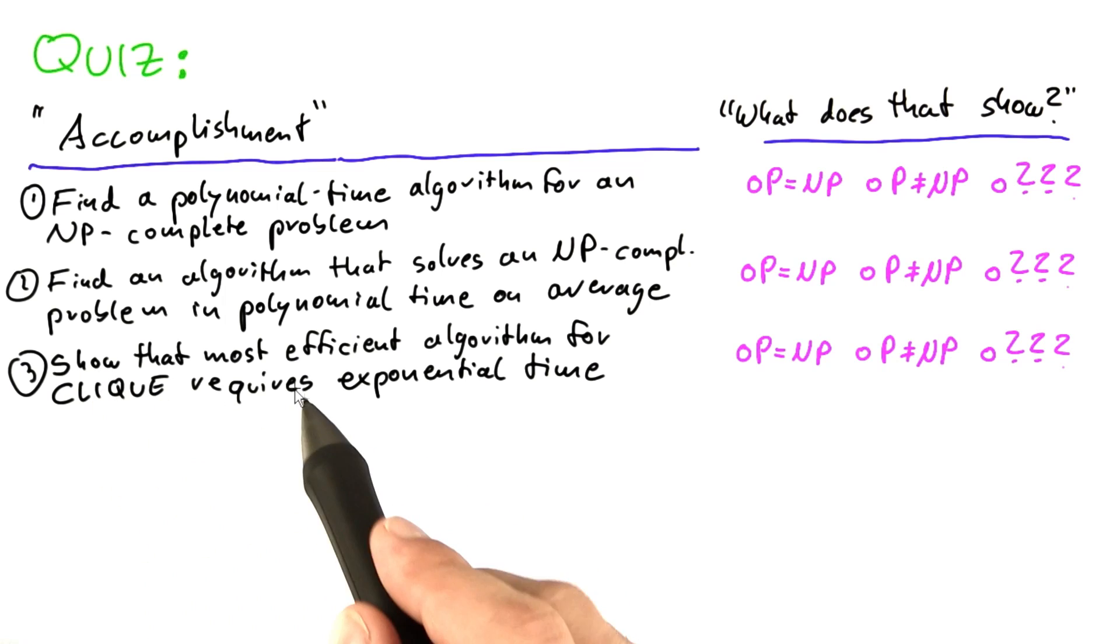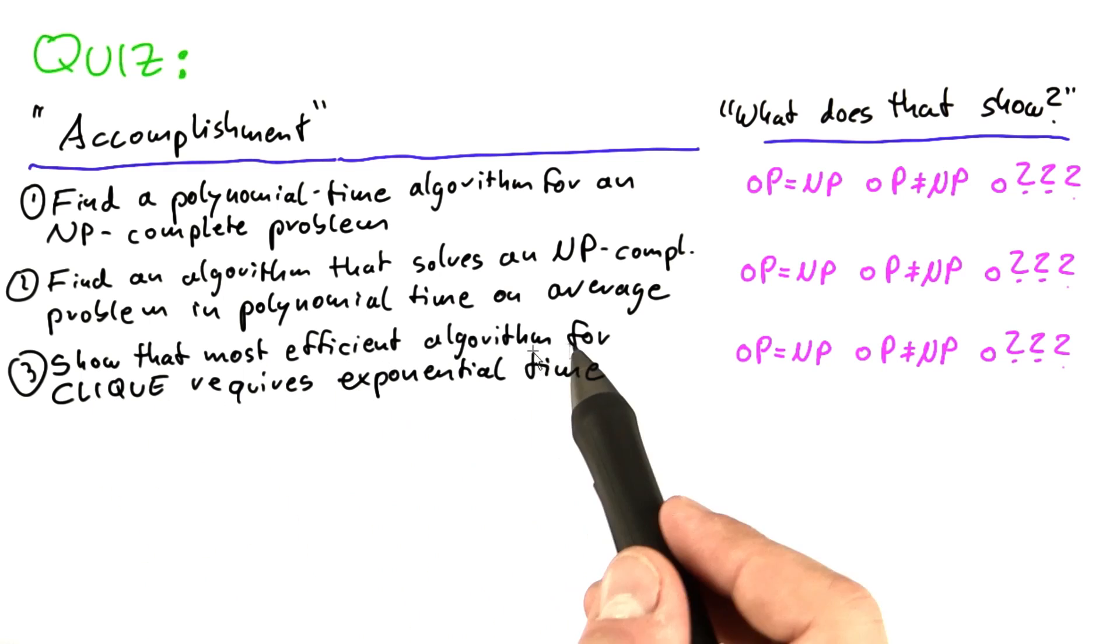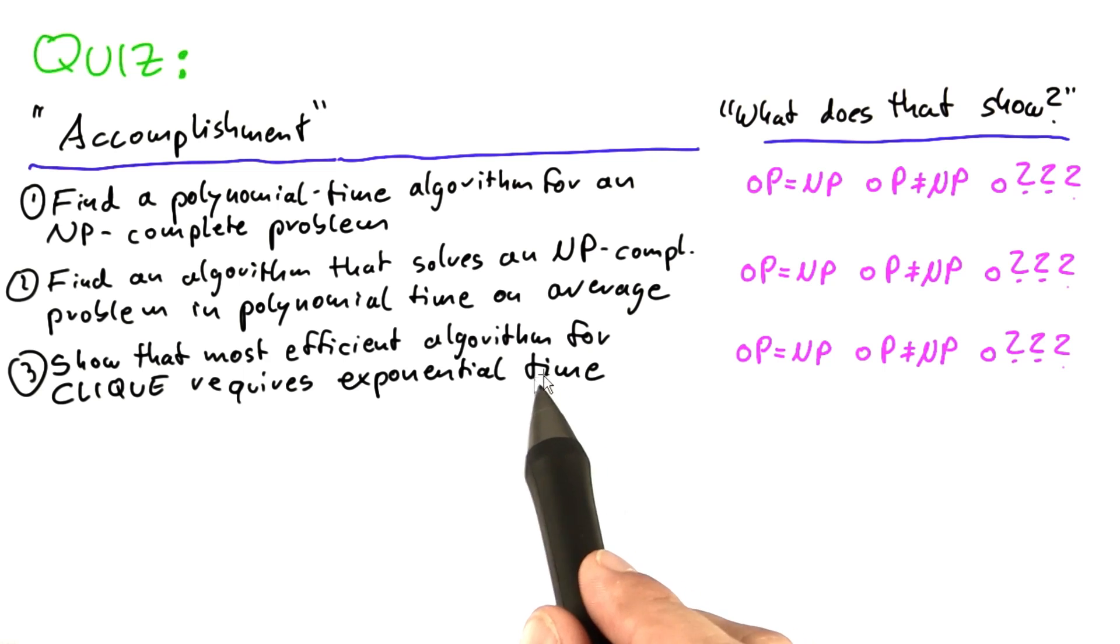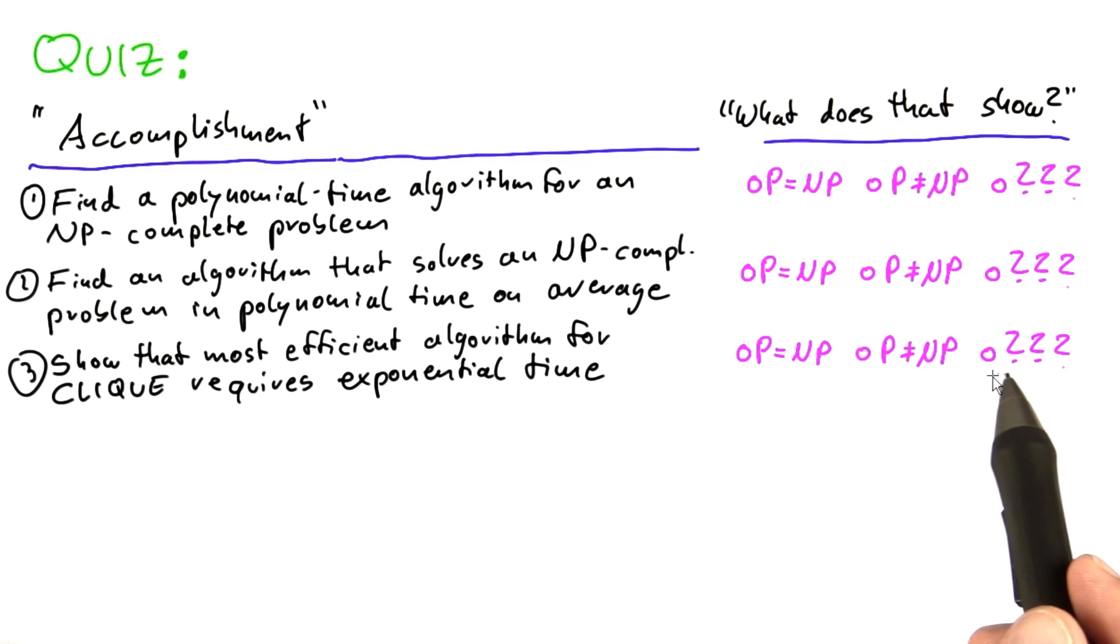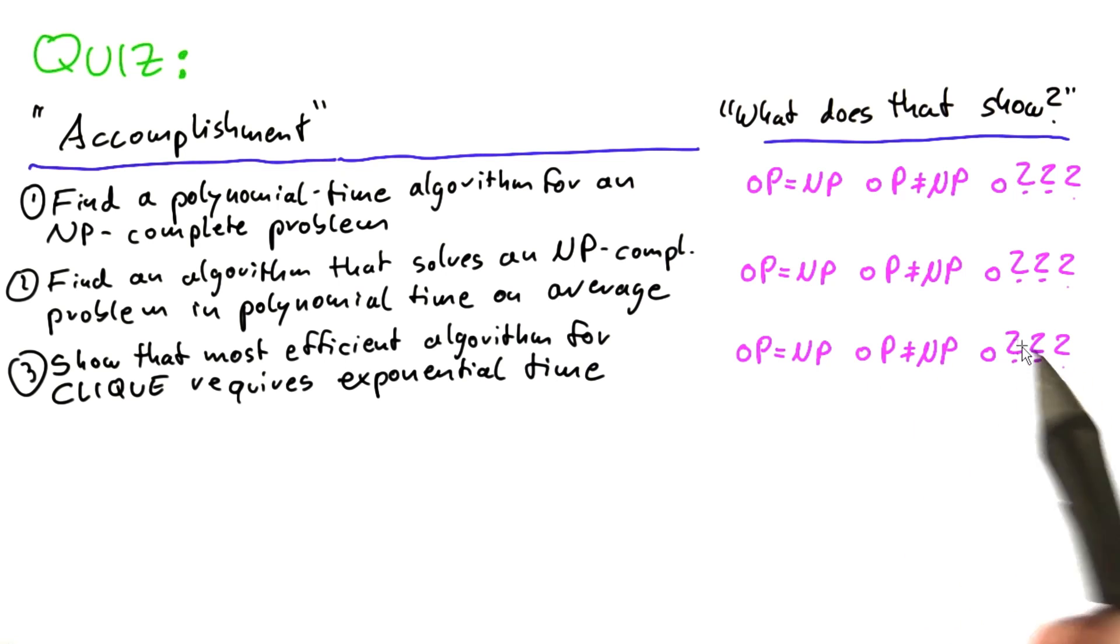What if you showed that the most efficient algorithm for clique requires exponential time on a deterministic RAM, of course? Would that show that P equals NP, P does not equal NP, or something else?